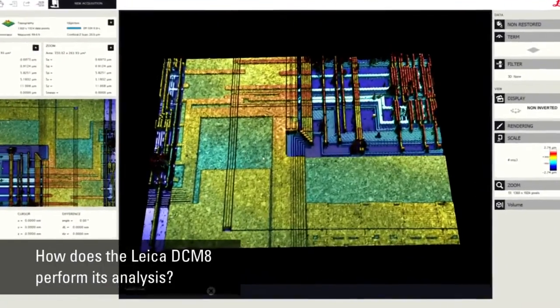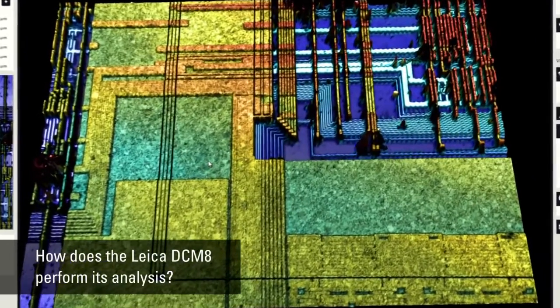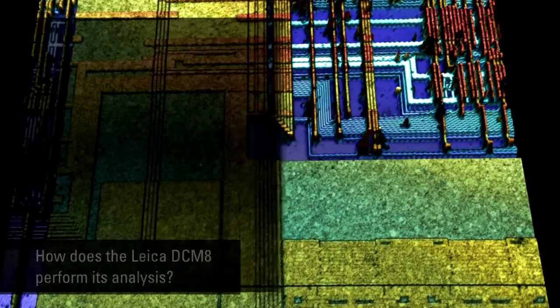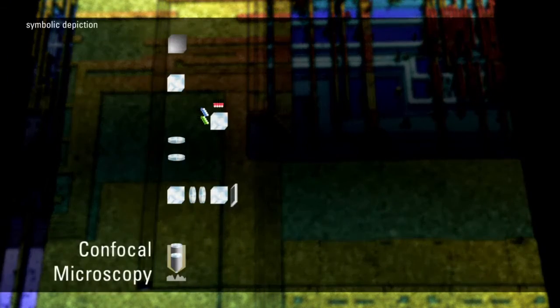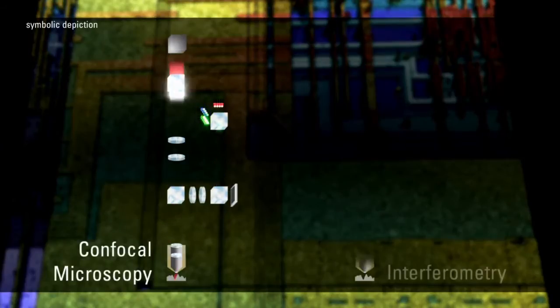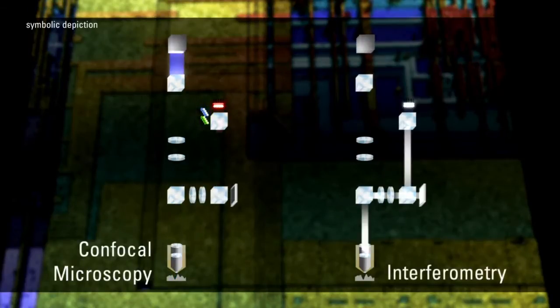There are two main methods of analyzing surface structure: confocal microscopy for the highest possible lateral resolution, and interferometry for sub-nanometer vertical resolution.